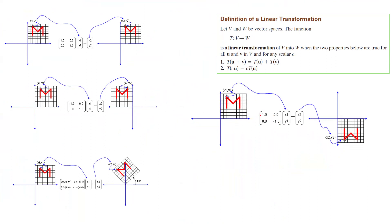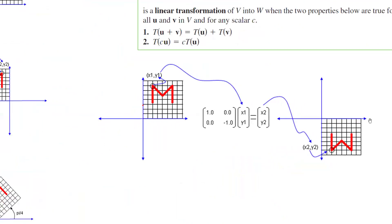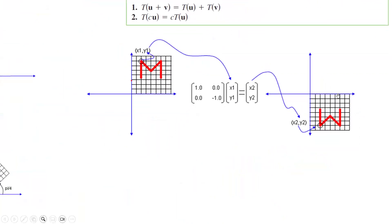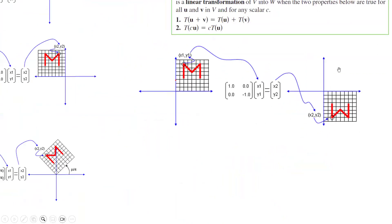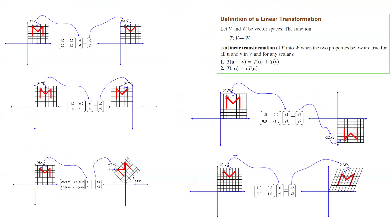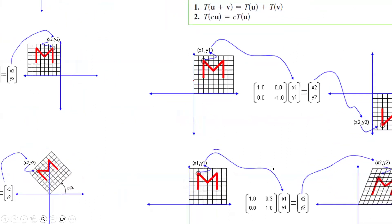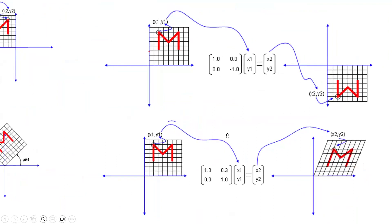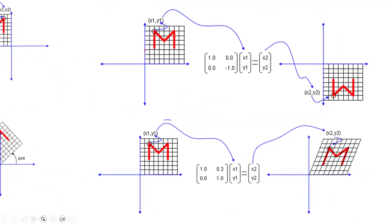If you consider the linear transformation given by the matrix [1, 0; 0, −1], you get a reflection with respect to the x-axis. These are interesting transformations to visualize. In other formats you can define many interesting transformations. For example, the object under the linear transformation given by the matrix [1, 1.3; 0, 1] produces a shear, giving you a skewed version of the original object.